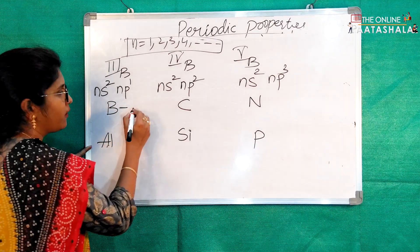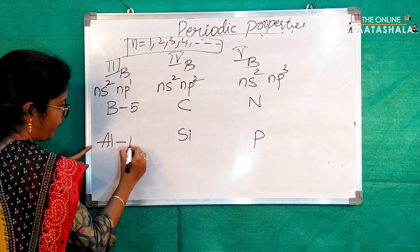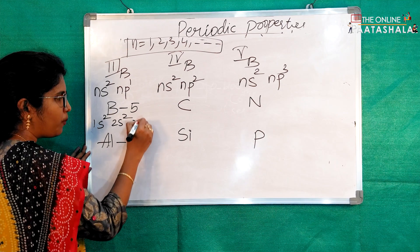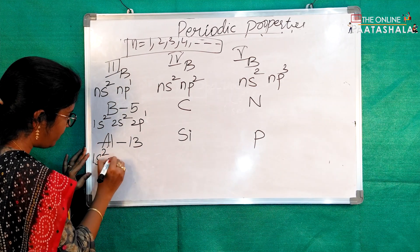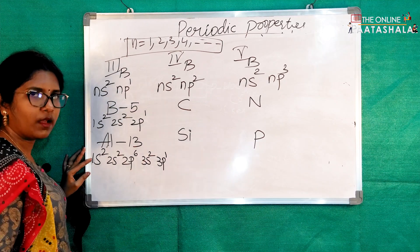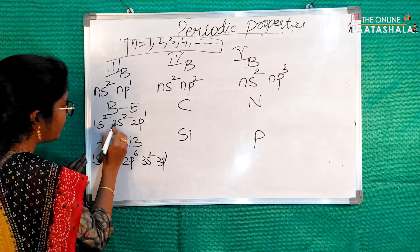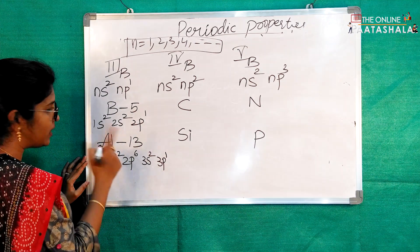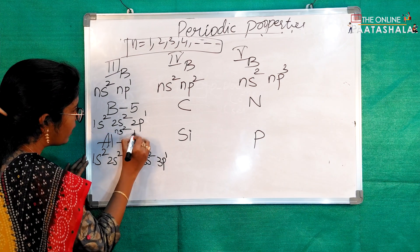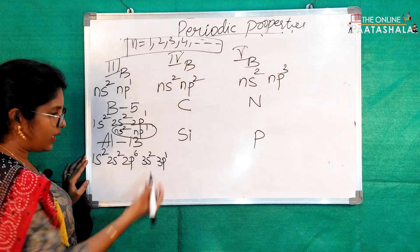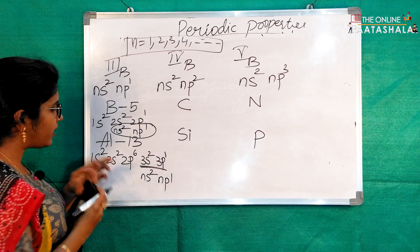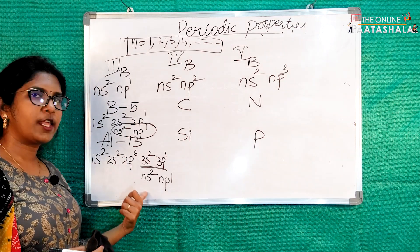Boron has atomic number 5 with configuration 1s2, 2s2, 2p1. Aluminium has atomic number 13 with configuration 1s2, 2s2, 2p6, 3s2, 3p1. Both are in the form ns2, np1 — confirming the general configuration for 3A group. Here N equals 2 for Boron and N equals 3 for Aluminium, showing that N can be 1, 2, 3, and so on.